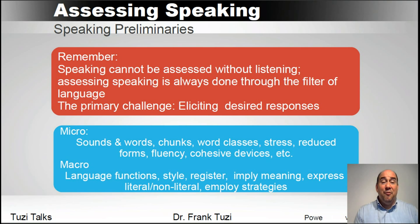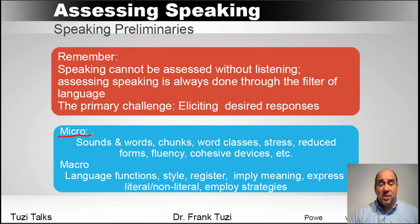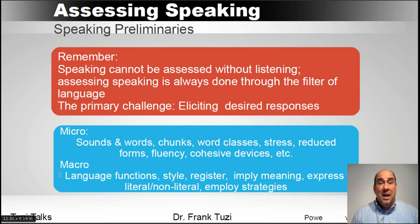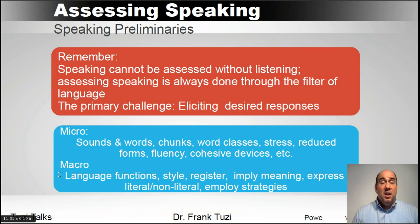Just like when we were speaking about listening, we've got different skill levels. We can talk about micro skills that students need to learn to produce, and also the more macro skills. Micro skills deal with the sounds, the creation of sounds, letters and chunks and word classes, the ability to do stress, and to create reduced forms.